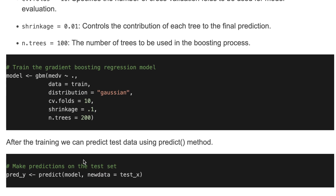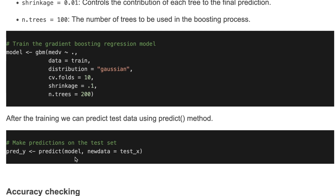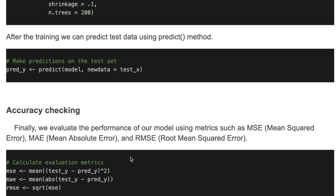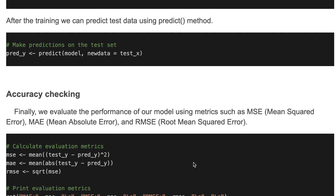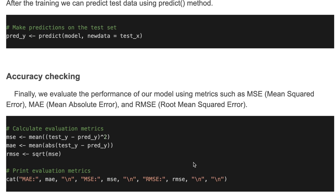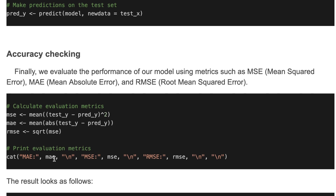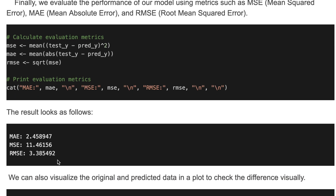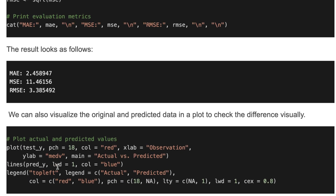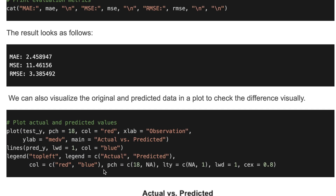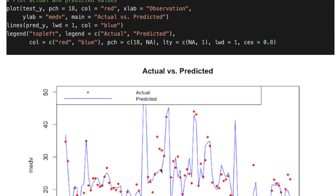After training the model, we can predict on test data using the predict method — we provide the model and the new test data. Finally, we evaluate the performance of our model using metrics such as MAE (mean absolute error) and RMSE (root mean squared error). Here is how to calculate the evaluation metrics and print the results. The results are shown, and we can also visualize the original and predicted data in a plot to check the difference visually.